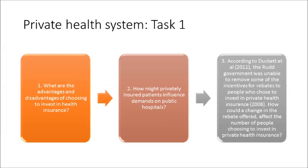Consider these questions related to the private healthcare system. One: what are the advantages and disadvantages of choosing to invest in health insurance? Two: how might privately insured patients influence demands on public hospitals? And three: according to Duckett and Wilcox, the Rudd government was unable to remove some of the incentives for rebates to people who chose to invest in private health insurance. How could a change in the rebate offered affect the number of people choosing to invest in private health insurance?